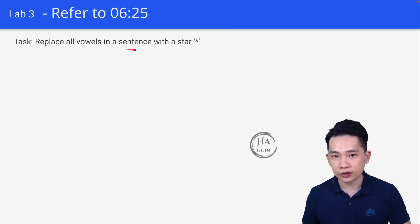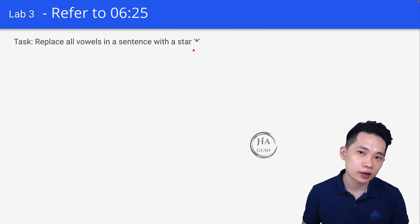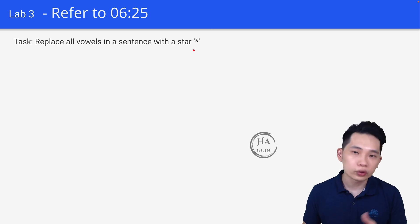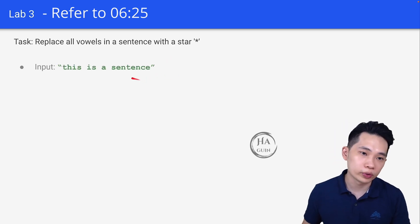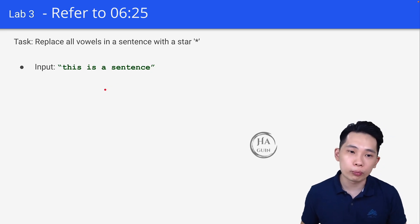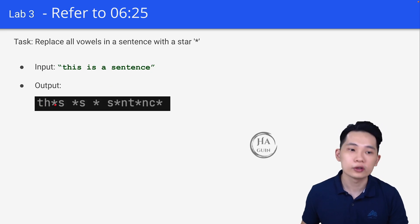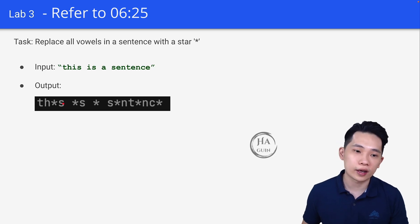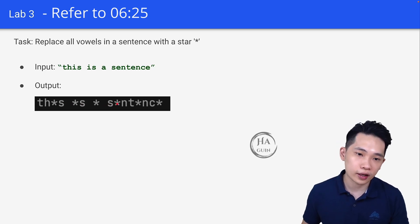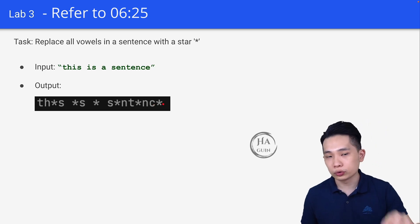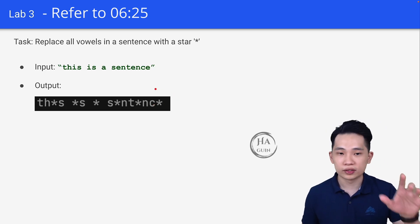For Lab 3, replace all vowel characters in a sentence with a star. Vowels are a, e, i, o, u. For example, the input is "this is a sentence" and each vowel gets replaced with a star, so 'i' becomes '*', 'a' becomes '*', and so on. Find each vowel and replace it with a star.